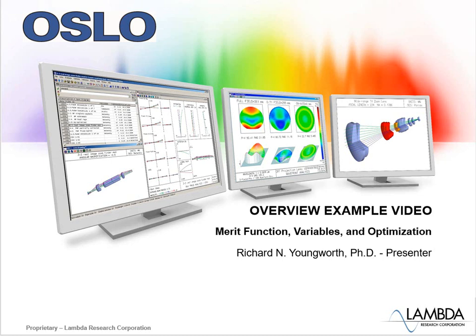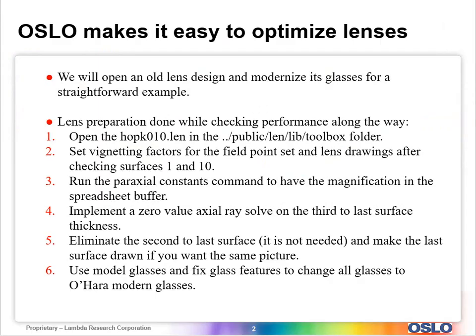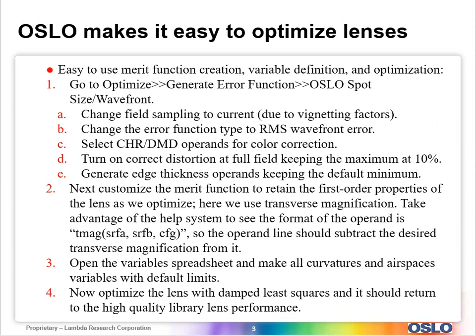Hi Hustle users. In this video we're going to give an overview showing how to define a merit function and then customize it, use our variables, and then optimize. It's going to show how easy it is to do this in the program to optimize a lens. We're going to do this in two steps: first, take a library lens and make some changes to prepare it for optimization, and then define the merit function, customize it, define some variables, and then do optimization.